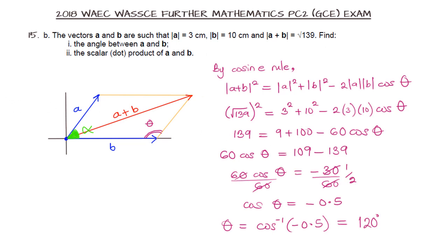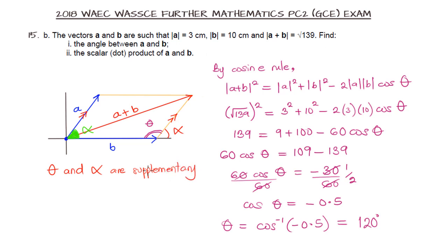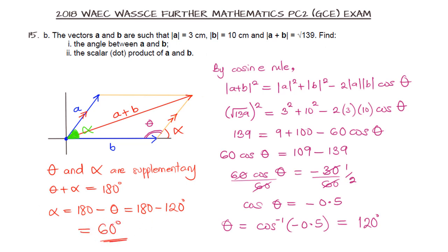Looking at the diagram, we are asked to find angle alpha, not angle theta. Because vector a is parallel to the corresponding line in the diagram, that angle is also alpha. Alpha and theta are supplementary — they add up to 180 degrees. So theta plus alpha equals 180 degrees, meaning alpha equals 180 minus theta. Since theta is 120 degrees, alpha equals 180 minus 120, which is 60 degrees. So the angle between vectors a and b is 60 degrees.